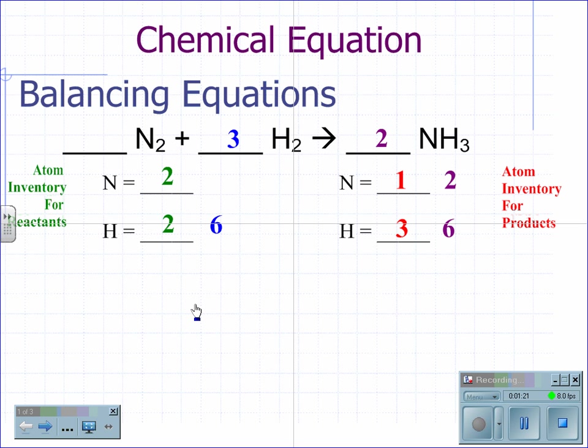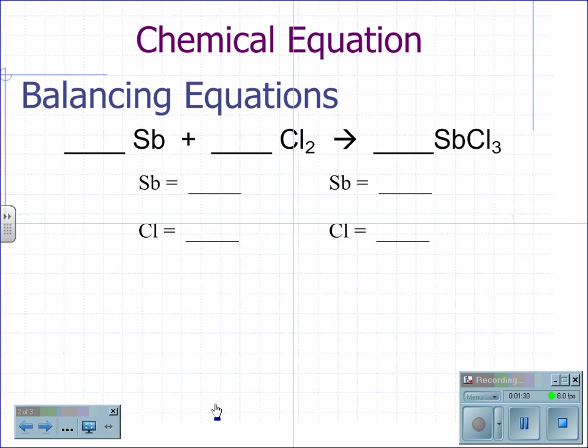Nitrogen two, hydrogen six on the reactant side, and nitrogen two and hydrogen six on the product side. Let's look at another example.